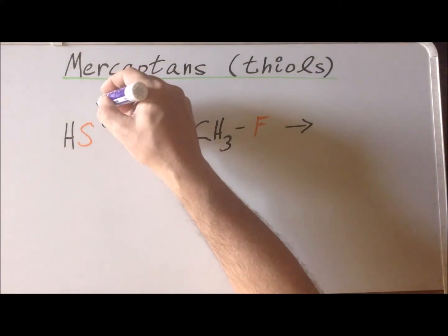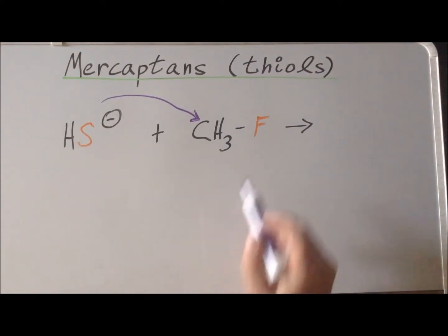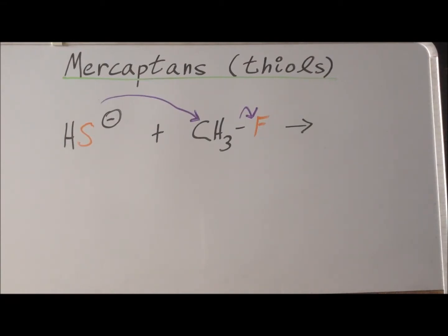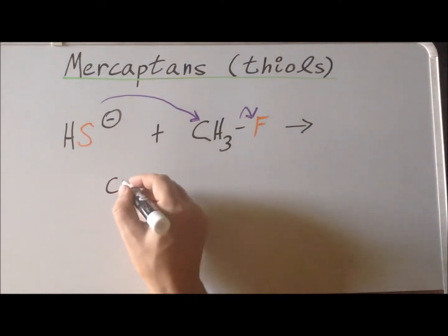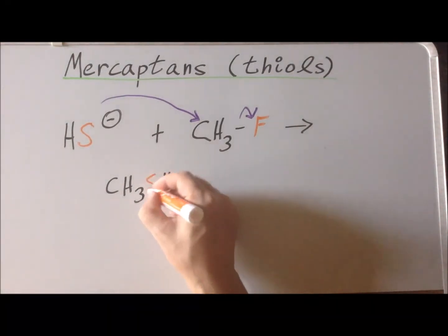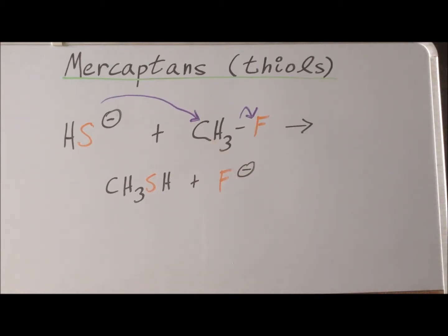SH minus is our nucleophile. It's going to attack the electron-deficient, slightly positively charged carbon. At the same time, we have rupture of the carbon-fluorine bond with the electrons going to fluorine, and we're left with our major organic product CH3SH, which we would call methanethiol or methyl mercaptan, plus fluoride as the leaving group. This is our net reaction. We will see in the following figures the computed transition states for this specific reaction with fluoromethane, and also the cases of chloromethane and bromomethane.